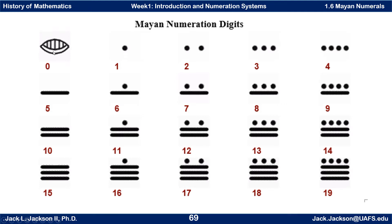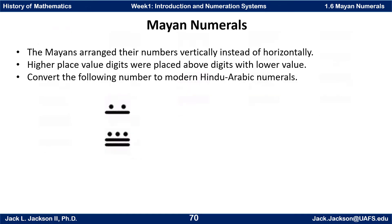That would be a one in the upper digit and a zero underneath, because they did their digits vertically rather than horizontally. They arranged their numbers vertically instead of horizontally — higher place value digits were placed above the lower ones. So these are the units digit, and these are the twenties digit up here.